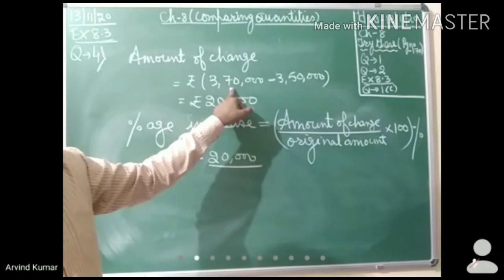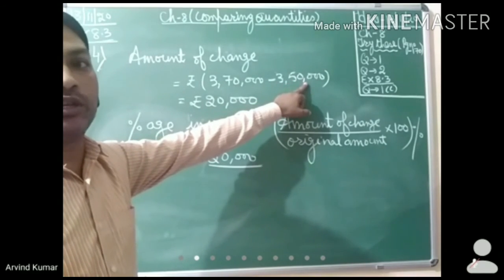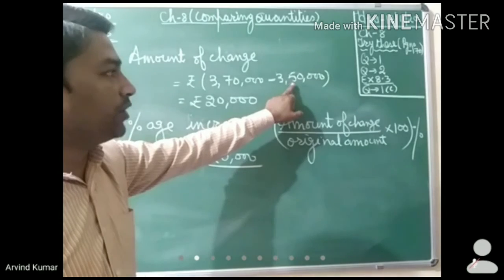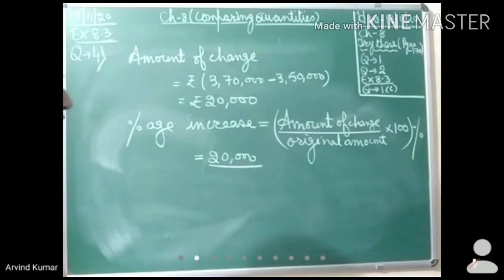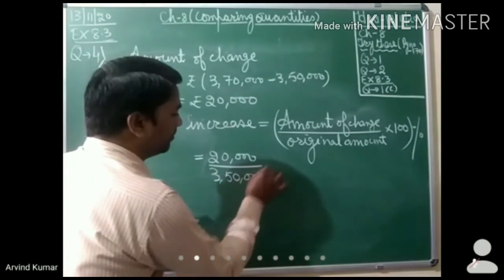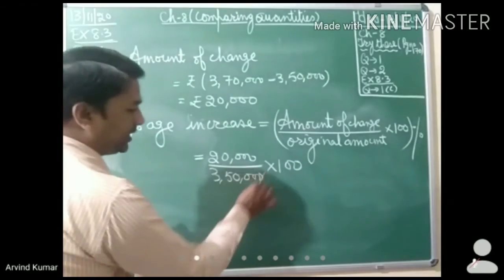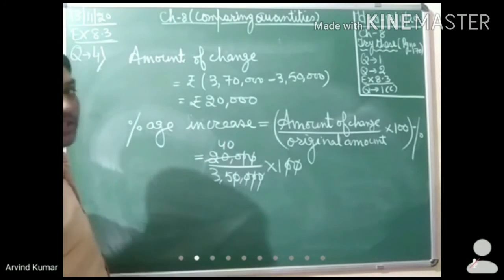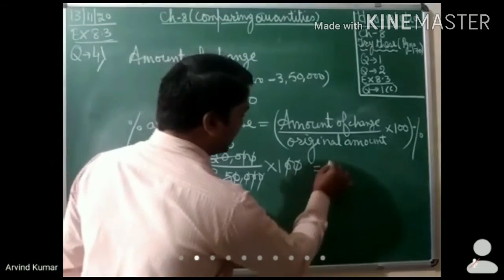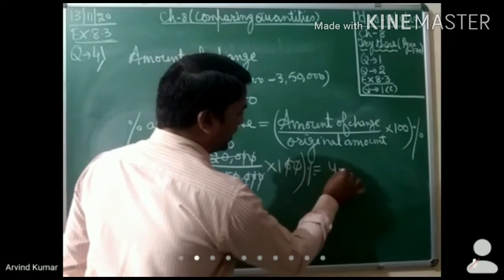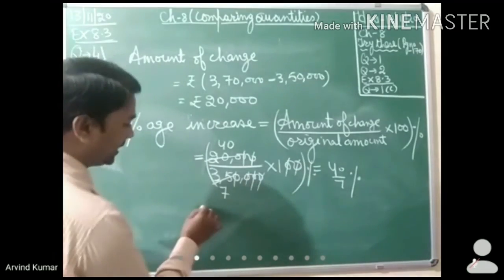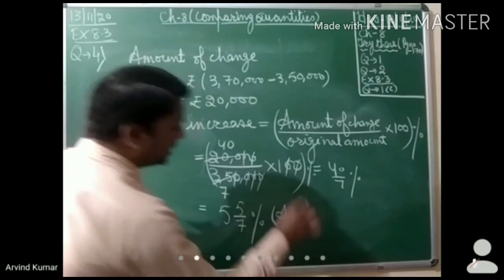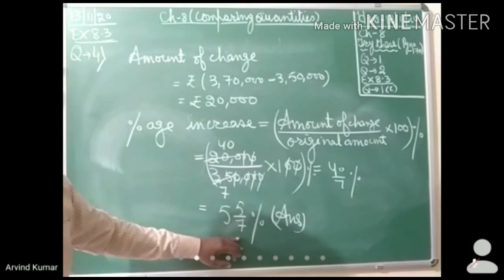The original amount is 3,50,000, because from this amount the price increased to 3,70,000. So substituting: 20,000 over 3,50,000 multiplied by 100. After simplification, the two zeros cancel, and we get 40 over 7 percent, which can also be written as 5 and 5 by 7 percent. Therefore, the percentage increase in price is 5 and 5/7 percent. This is the required answer.